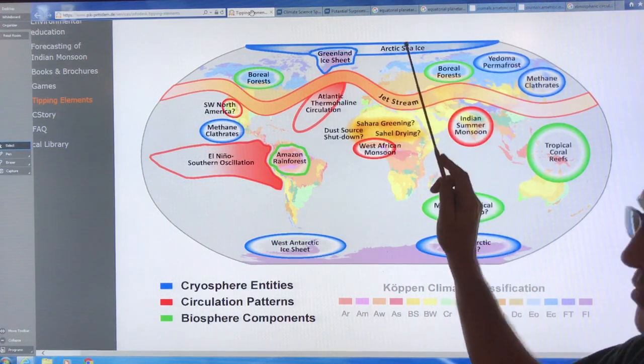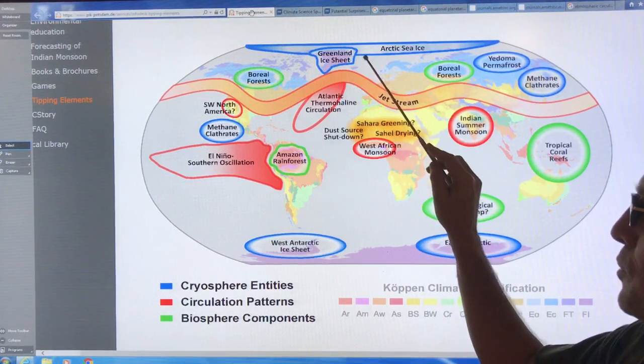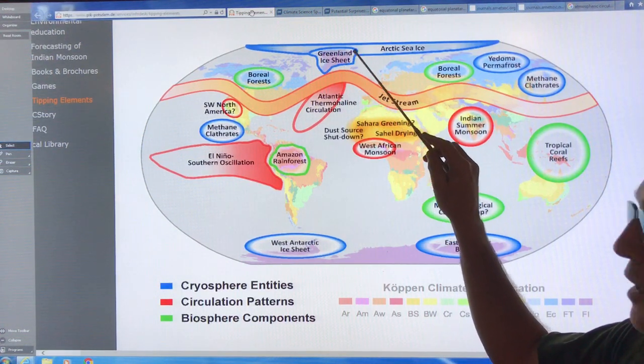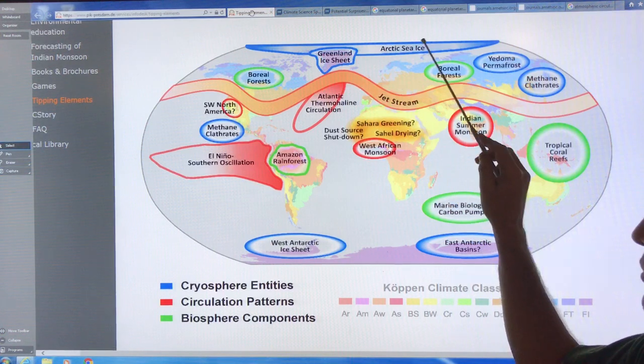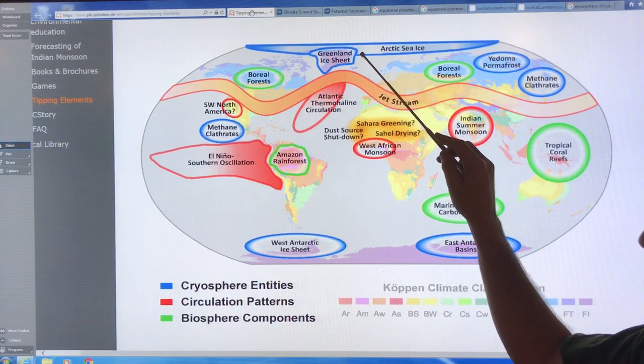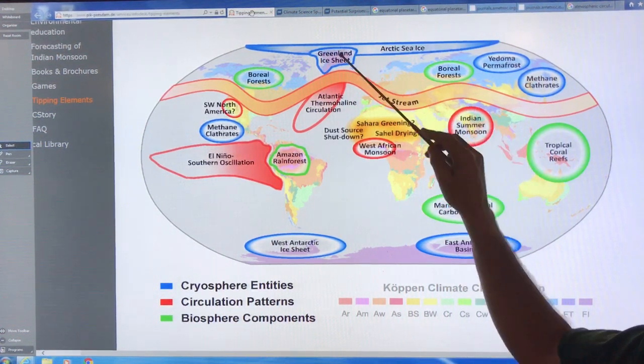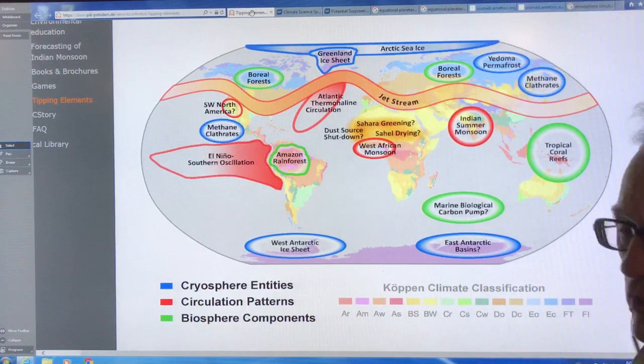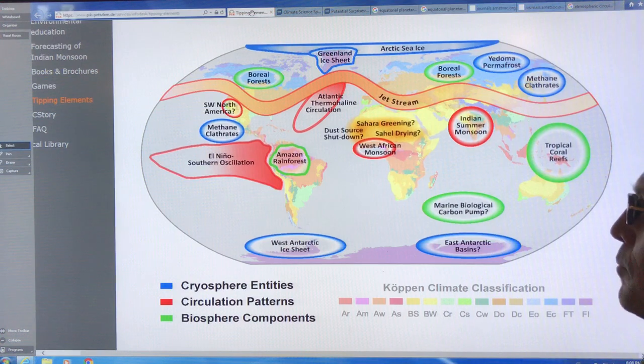Once the Arctic sea ice goes, then the melt rate from the Greenland ice sheet will skyrocket, greatly raising sea level rise. As the Arctic sea ice goes and the Greenland ice sheet goes, the Arctic is getting darker and darker, absorbing more heat in the summers up there.